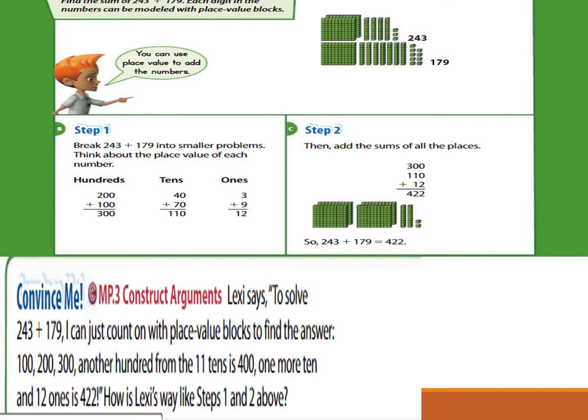Look at the smaller problems. Adding the partial sums — this is like step 2. Also, the final sum is found when she finishes counting on with the blocks. Lexi says she will add hundreds alone, tens alone, and ones alone — this is like step 1. Breaking the numbers and adding the partial sums is like step 2.